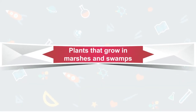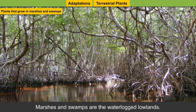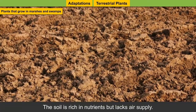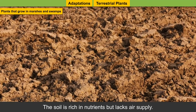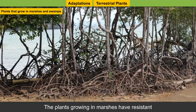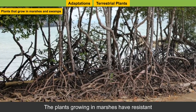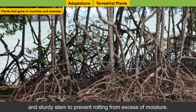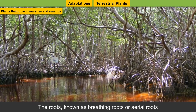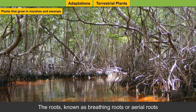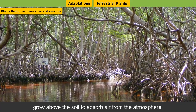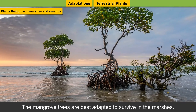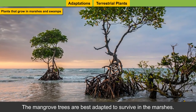Plants that grow in marshes and swamps: Marshes and swamps are waterlogged lowlands where the soil is rich in nutrients but lacks air supply. The plants growing in marshes have a resistant and sturdy stem to protect from excess moisture. The roots, known as breathing roots or aerial roots, grow above the soil to absorb air from the atmosphere. The mangrove trees are best adapted to survive in the marshes.